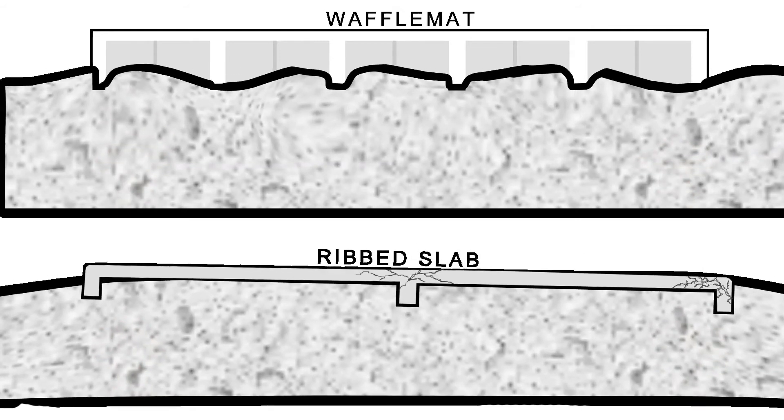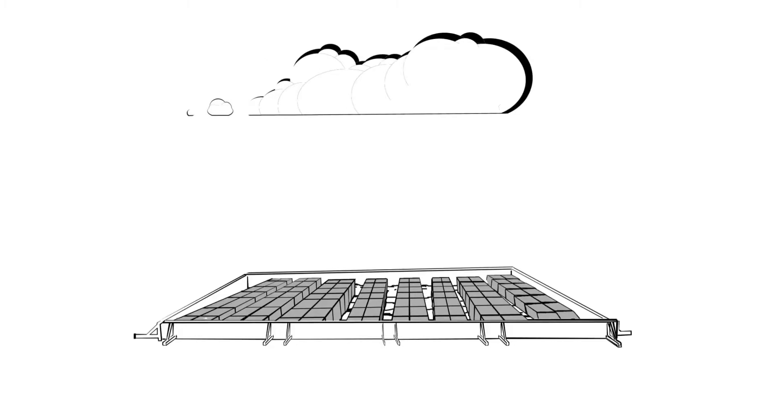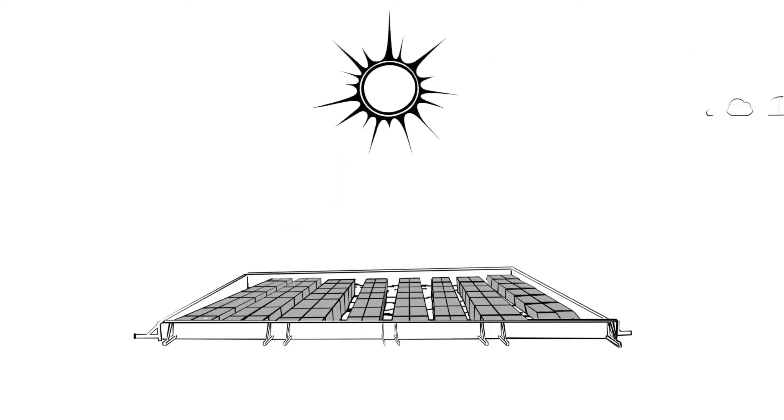Waffle Mat is also much easier to build if the weather turns bad because the waffle boxes are made of recycled polypropylene plastic, a very environmentally friendly material, and are not affected by rain so there's no delay in construction.